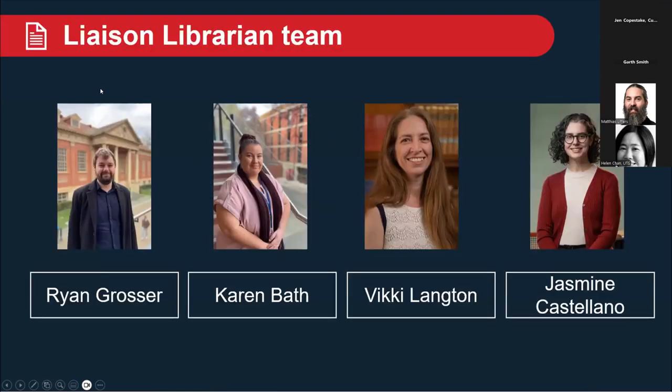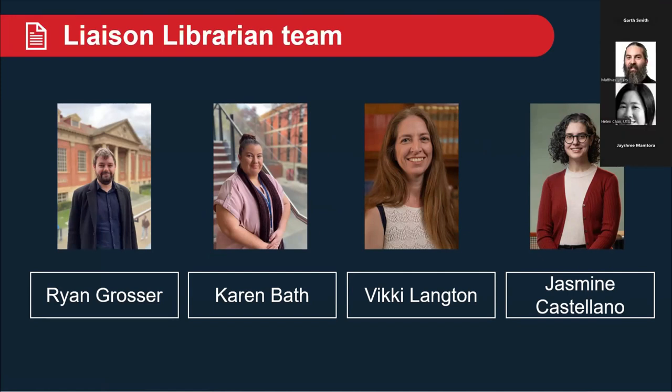I'll start by introducing our liaison librarian team at the University of Adelaide. Currently, we are a team of four liaison librarians supporting three faculties across the university. My colleagues are Karen, Jasmine and Vicky, who liaise and engage with the Faculty of Science, Engineering and Technology and also Health and Medical Sciences, respectively, while I liaise with the ABLE faculty.